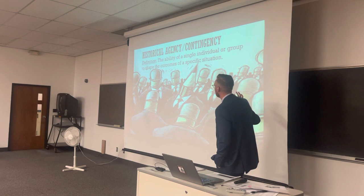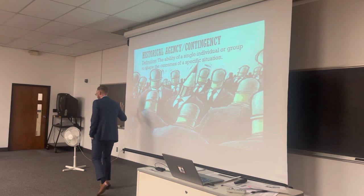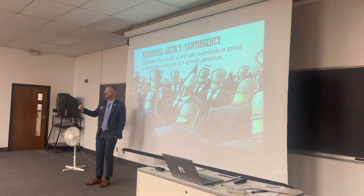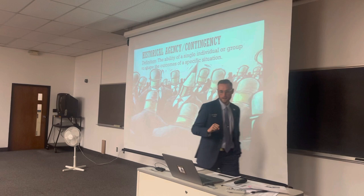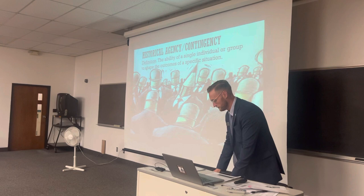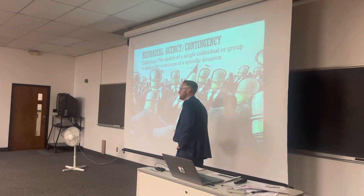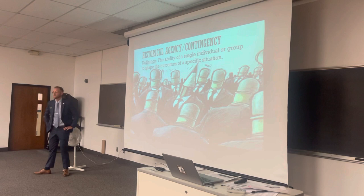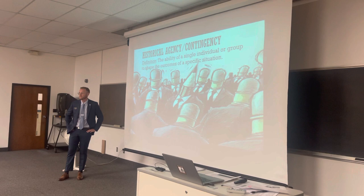Agency and contingency is a big deal: the ability of a single individual or group to shape the outcomes of historical events. One way I think about it — if somebody else was there, would things turn out differently? How are the 1998 Chicago Bulls different if you substitute LeBron James for Michael Jordan? What does American comedy look like without Adam Sandler? What if Drew Bledsoe never got hurt — does Tom Brady still rise to the top?